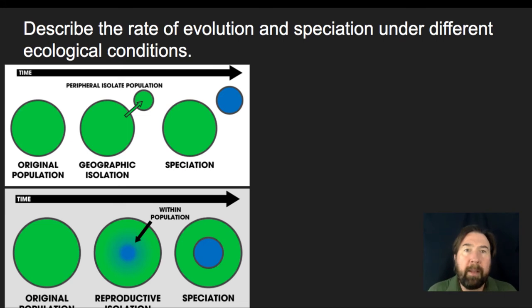Now, it is important to know that the rates of evolution and speciation under different ecological conditions take place. So we talk about the idea of having an original population and having some sort of separation where a group moves to a separate population. If the geographic barrier happens and the two get completely isolated from one another and they no longer have gene flow, you may actually see that after just a few generations, that would lead to speciation.